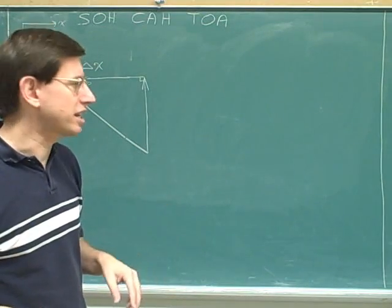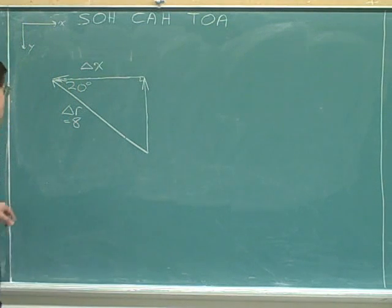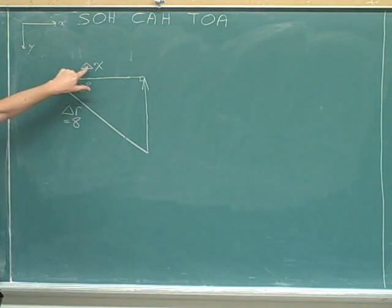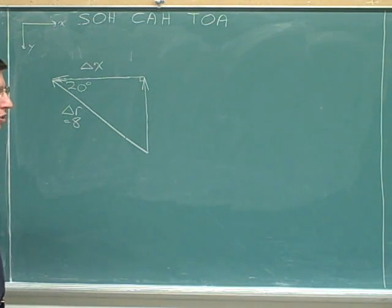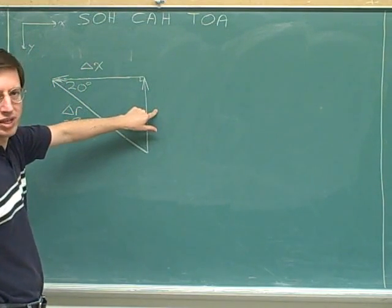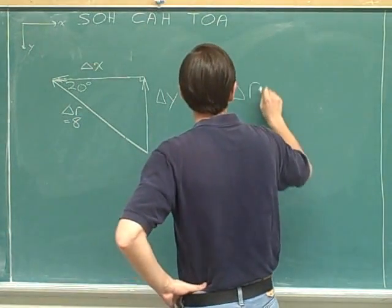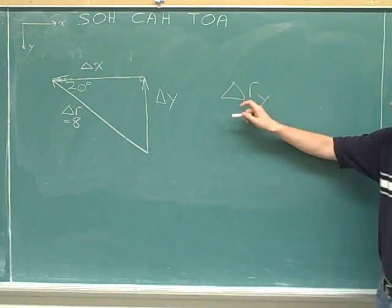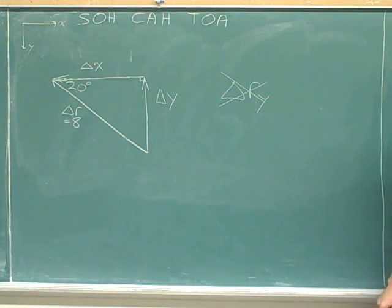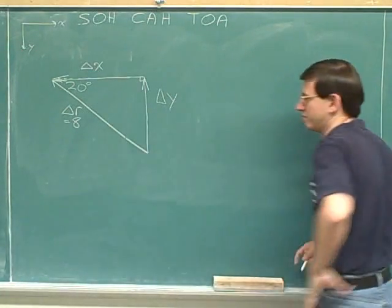For example, the X component of acceleration is A sub X, and the X component of velocity is V sub X — but the X component of displacement is not delta R sub X, it's just delta X. That's a convention we should get used to. Similarly, the Y component of displacement is delta Y, not delta R sub Y. Even though that seems logical, it's just not the conventional way to write it. We just call it delta Y.